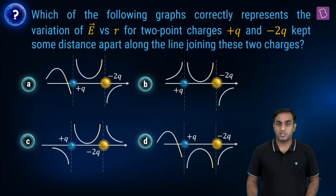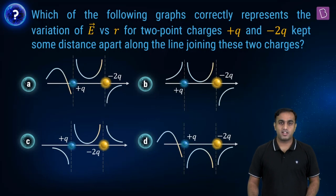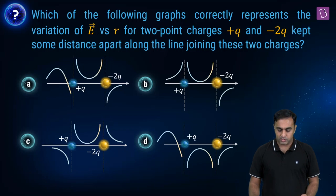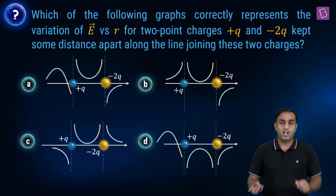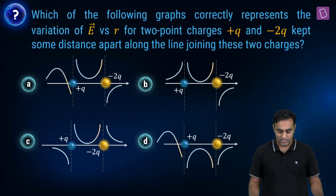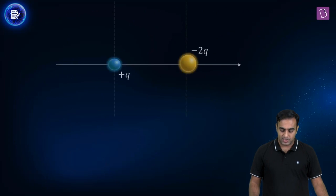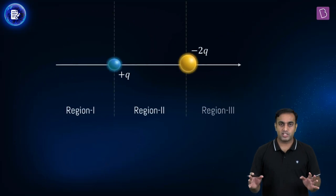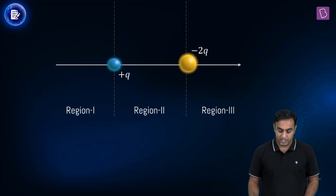Next is an interesting question. We are given a configuration of two charges, Q and minus 2Q, separated by a certain distance. Four options show the variation of the electric field along the line joining these two charges, and we must choose the correct one. To do this, let's split the entire space into three regions and analyze the electric field in each.